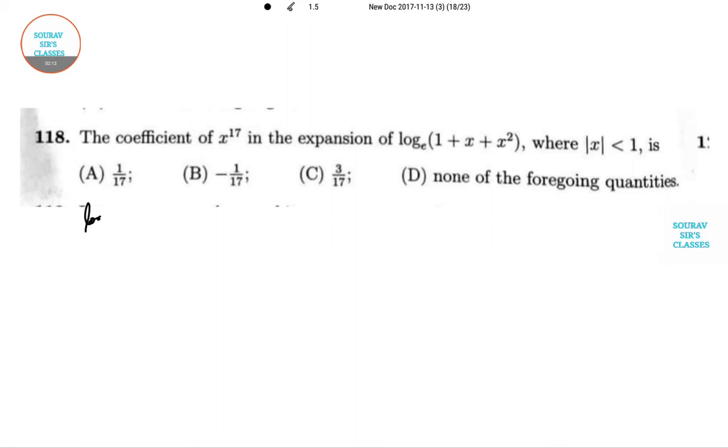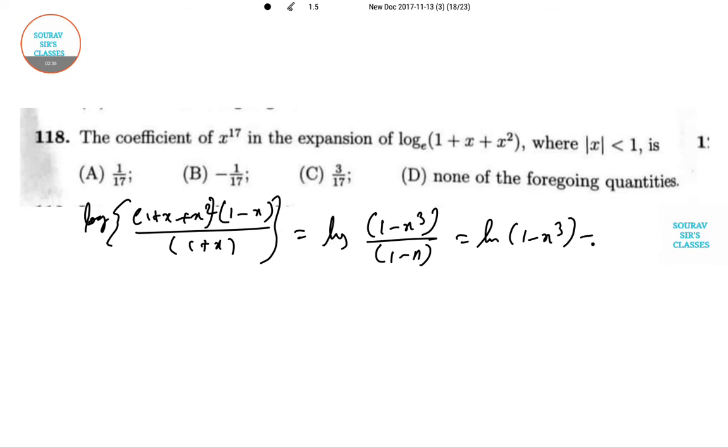Remember that whenever you have to solve this question, it's better you have a denominator term. Whenever we have this, it's better if we reduce the term. It will be easier. So what I am doing, in order to do that, I am adding one term. So this is log of (1 - x³)/(1 - x). Now we have a very special structure minus log of (1 - x).